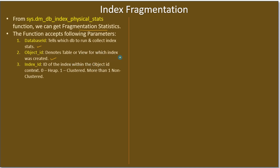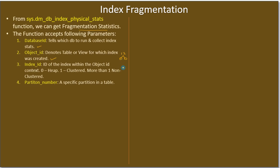index_id is the ID of the index within the object_id. For example, if a table has two indexes you can use the index_id to identify each one. The partition_number parameter is useful when a table is split into multiple partitions — you can identify which partition contains more fragmented indexes, or which partition is most frequently accessed via DML statements and thereby causing more fragmentation.